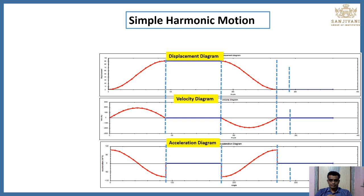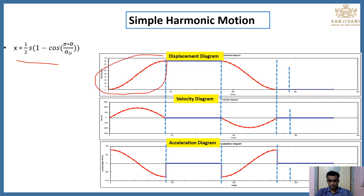This is the diagram for simple harmonic motion. This is the displacement diagram and this is the velocity diagram for 360 degrees of rotation. The equation for the displacement diagram is: x equals one-half of stroke length s, into bracket one minus cosine of pi times theta upon theta-o. Here theta is the cam angle for any particular rotation. This portion represents the outstroke — the total theta-o is the outstroke angle, the angle at which the follower moves in the upward direction. This is the dwell where it remains in its stationary position.